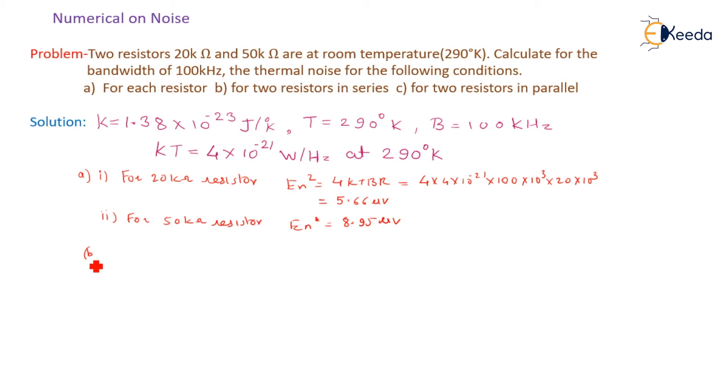Now second case B for two resistors in series combination. So net resistors will be R equal to R1 plus R2, and directly I can write here R1 plus R2 equals 70 kΩ. Now here if we calculate En, En value is equal to 5.66, that is calculated earlier, into under root of 70 divided by 20. That value is equal to 10.59 microvolts.